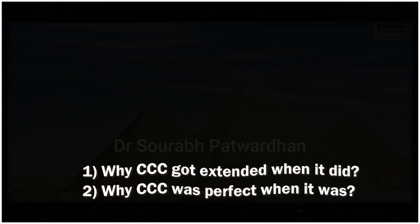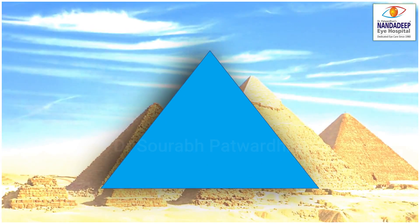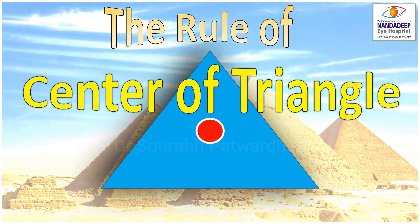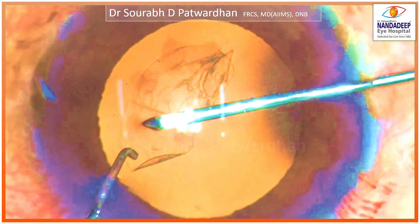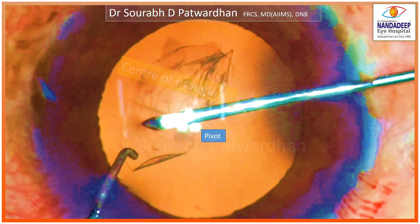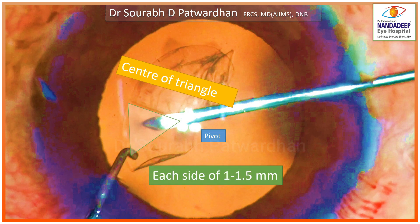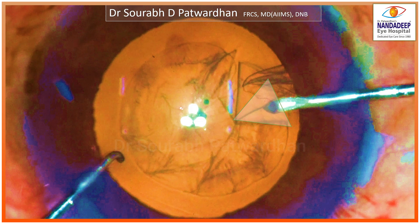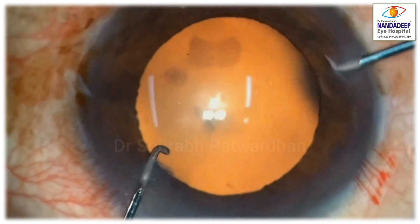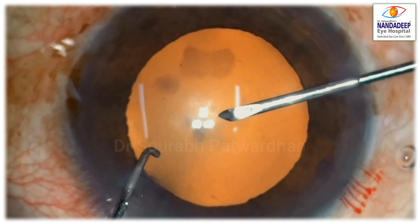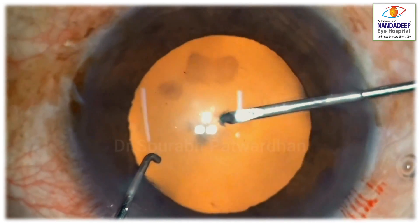After going through multiple videos, I found out there is a rule — I call it the rule of center of triangle. What is this imaginary triangle? It is a triangle with apex at the tear edge and each side of 1 to 1.5 millimeters. This triangle changes as the CCC advances.